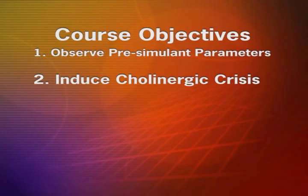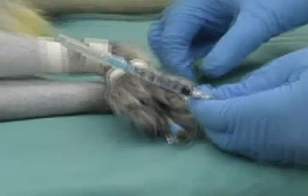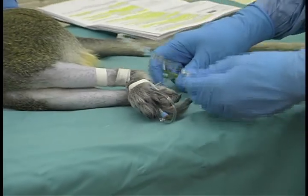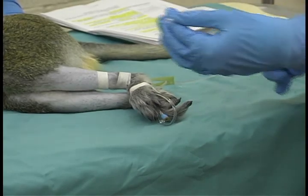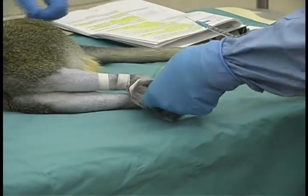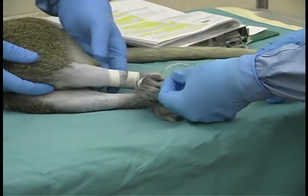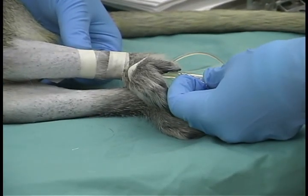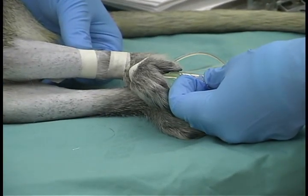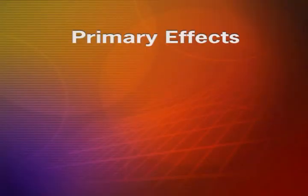The second objective is to induce a cholinergic crisis. Once everyone's evaluation of the non-human primate is complete, physostigmine is administered via the vascular line. Physostigmine is a cholinesterase inhibitor of the carbamate group. It binds reversibly to acetylcholinesterase. Primary effects at the postganglionic parasympathetic nerves, also the muscarinic sites, include profuse salivation.